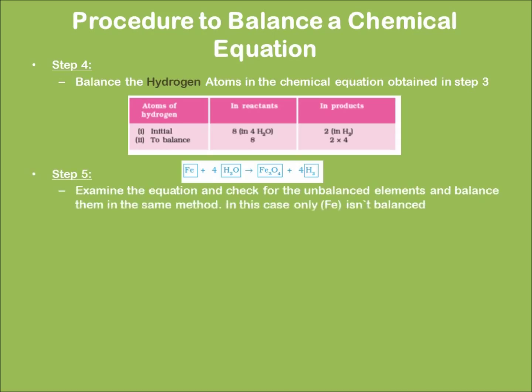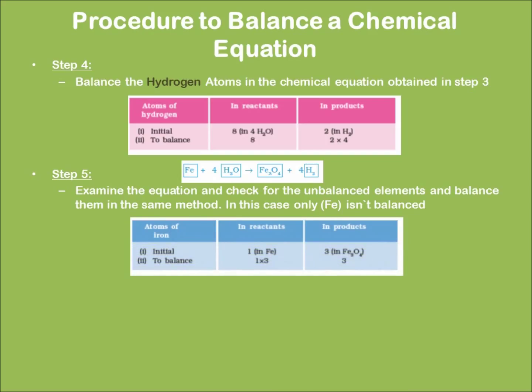Step number five. In the similar way, balance the other atoms excluding hydrogen and oxygen. In this case, I have iron left. So I have three on the right and one on my left, so I multiply it by three.